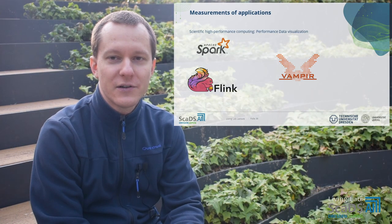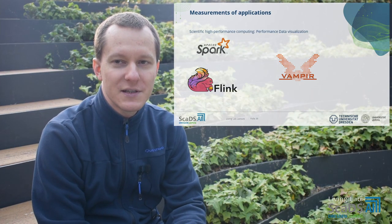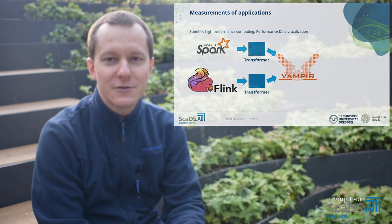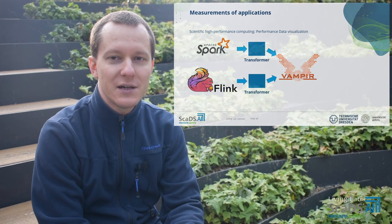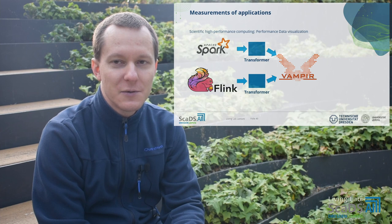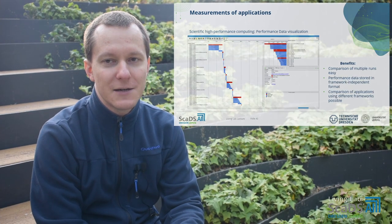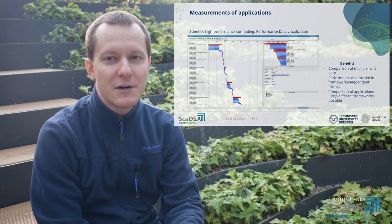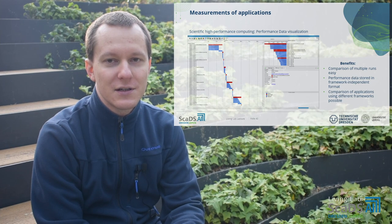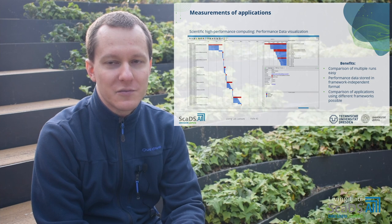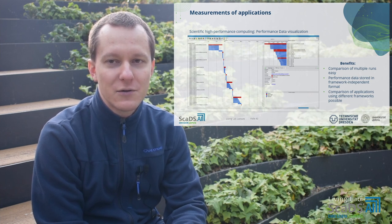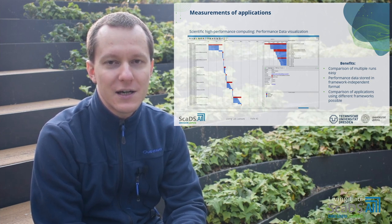So, we created a transformer that takes the performance data from Spark or Flink and stores the data in a format that Vampir understands. Thus, we can reuse the comparison features of Vampir to compare different runs of a single application. Apart from that, the data is also stored in a format that is independent from Spark or Flink, so that we could also compare Spark and Flink applications.